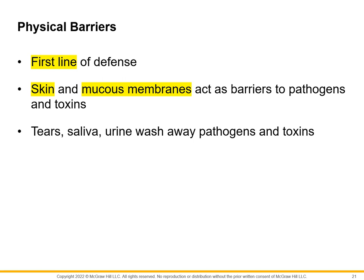Physical barriers are referred to as our first line of defense because they are readily present. Examples include our skin and mucous membranes found in the nasal and oral cavities, which act as barriers to pathogens and toxins. Other examples include tears, saliva, and urine, because they have the capability to wash away pathogens and toxins through their flow. All of these are considered physical barriers — our first line of defense.